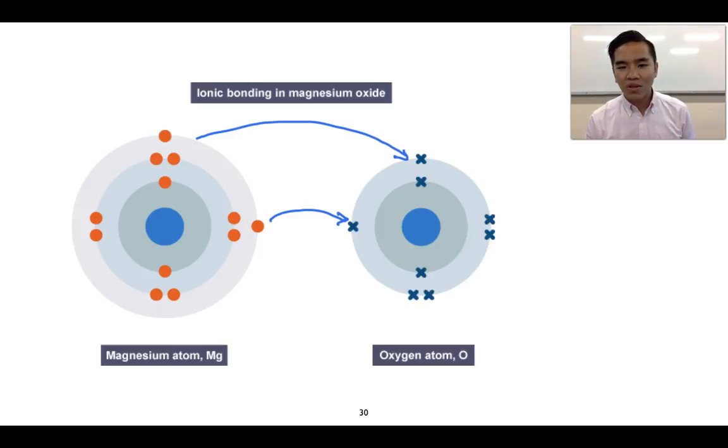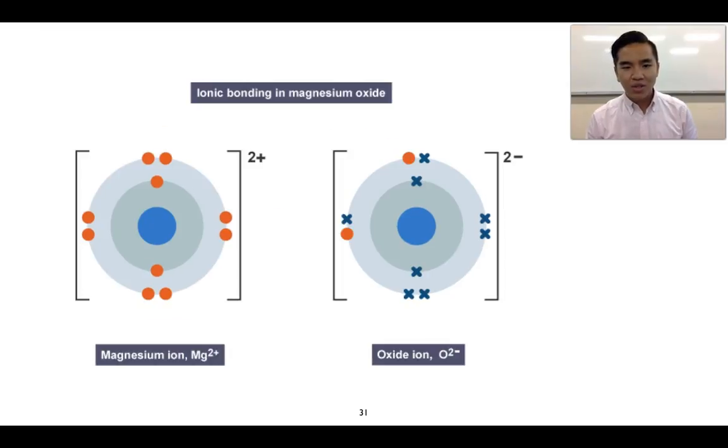When they do that, they form ions. Magnesium forms the magnesium ion with a 2+ charge because it's lost two electrons. Oxide ions are 2- because oxygen has gained two electrons to form this ion. They will form a strong force of attraction due to the opposite charges of the ions, and this is what an ionic bond is.